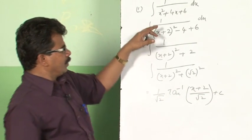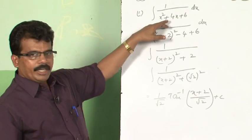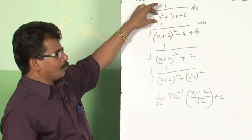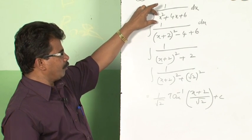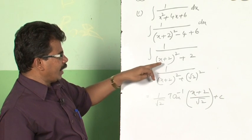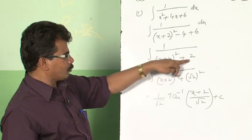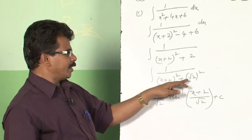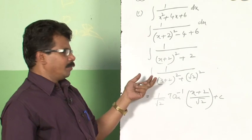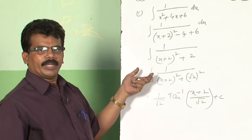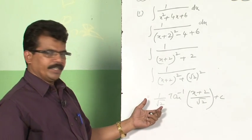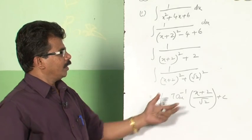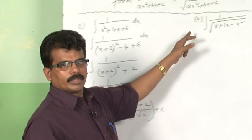So we apply that formula here: 1 by a, that is 1 by root 2, times tan inverse of x plus 2 divided by root 2, plus c. So if we have a quadratic polynomial in the denominator, try to reduce it into a known form like x square plus a square, x square minus a square, or a square minus x square. If there is a root, apply the root formula to find the integration.